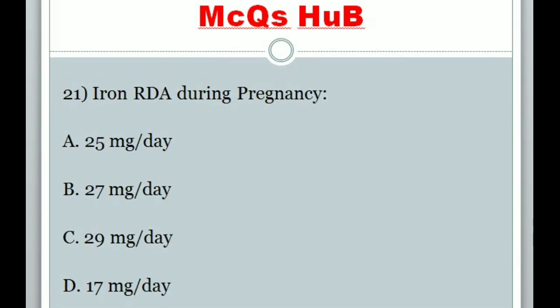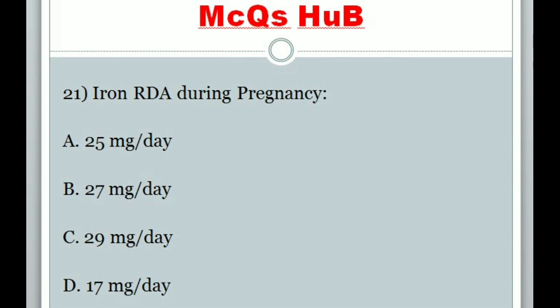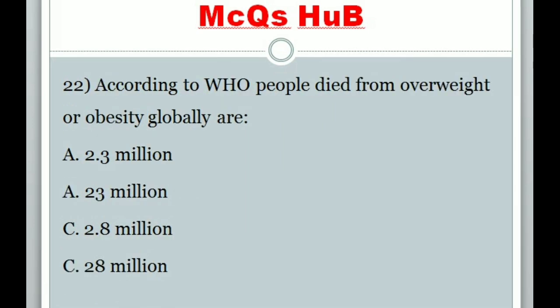Question 21: Iron RDA during pregnancy? Answer B: 27 mg per day.